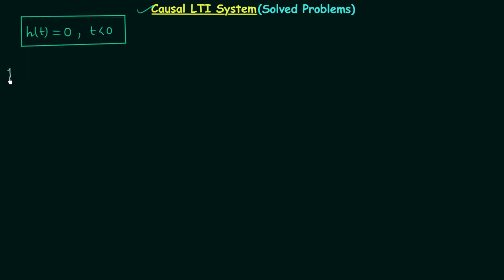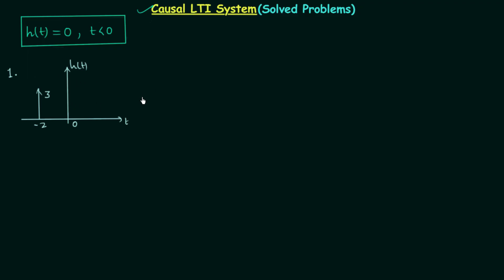In the first problem, the impulse response of an LTI system is given as a waveform. When t equals minus 2, there is an impulse with weight equal to 3. To check whether this LTI system is causal or non-causal, we focus on the impulse response when t is less than 0 — from minus infinity to 0. We can see that h(t) is not equal to 0 at t equals minus 2; specifically, h(-2) equals 3.